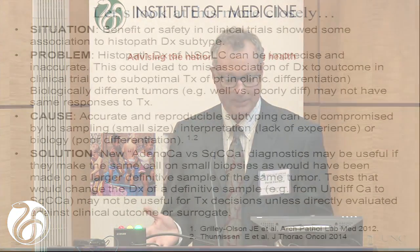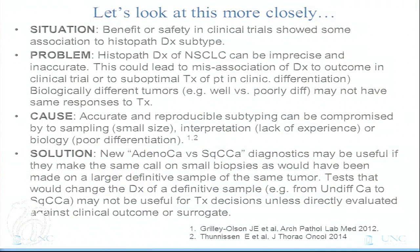The causes: accurate and reproducible subtyping can be compromised by sampling if the sample is too small, by interpretation if the pathologist lacks experience, or by biology if the tumor is very poorly differentiated — making it nearly impossible to call squamous or adenocarcinoma. Solutions depend on the real problem. New adeno-versus-squamous diagnostics would be useful if they make the same call on small biopsies that would have been made on a larger definitive sample of the same tumor, because the clinical trials were done that way. Tests that would change the diagnosis of a definitive sample from undifferentiated carcinoma to squamous cell cancer might not be useful for treatment decisions unless directly evaluated against clinical outcomes or surrogates.